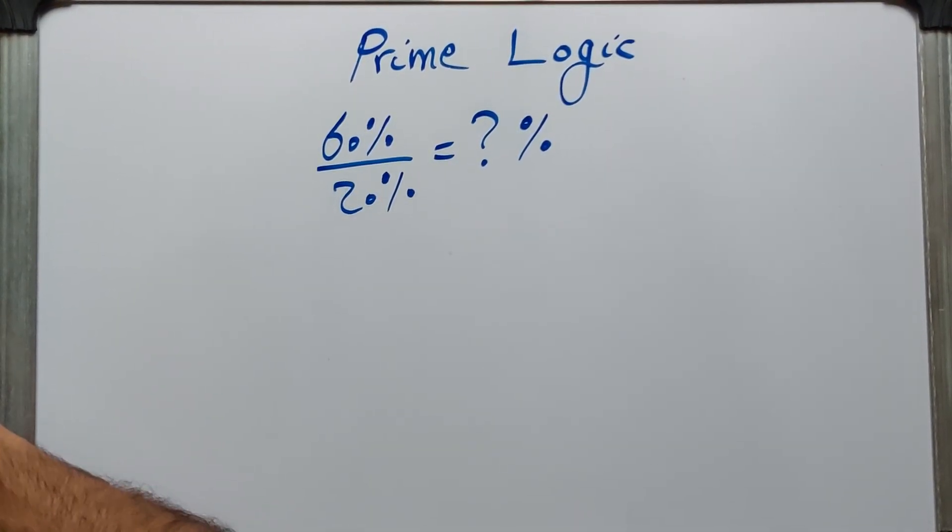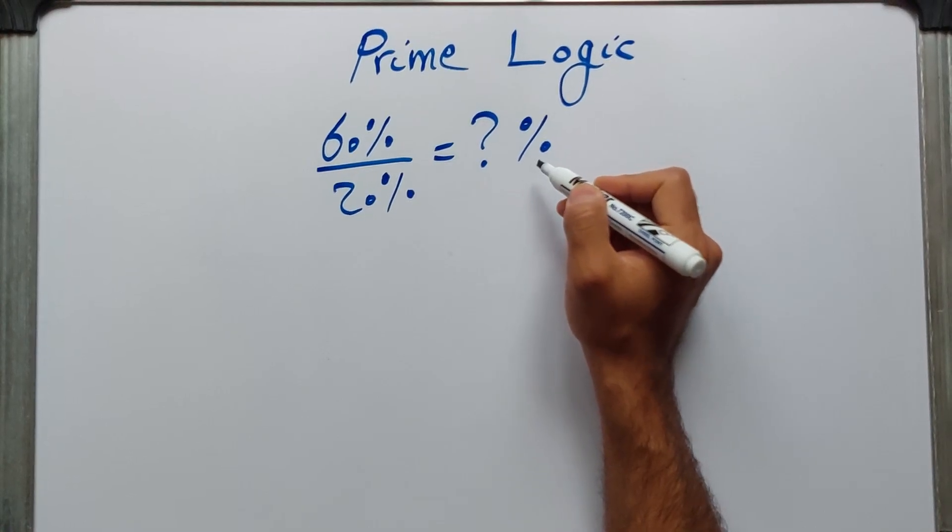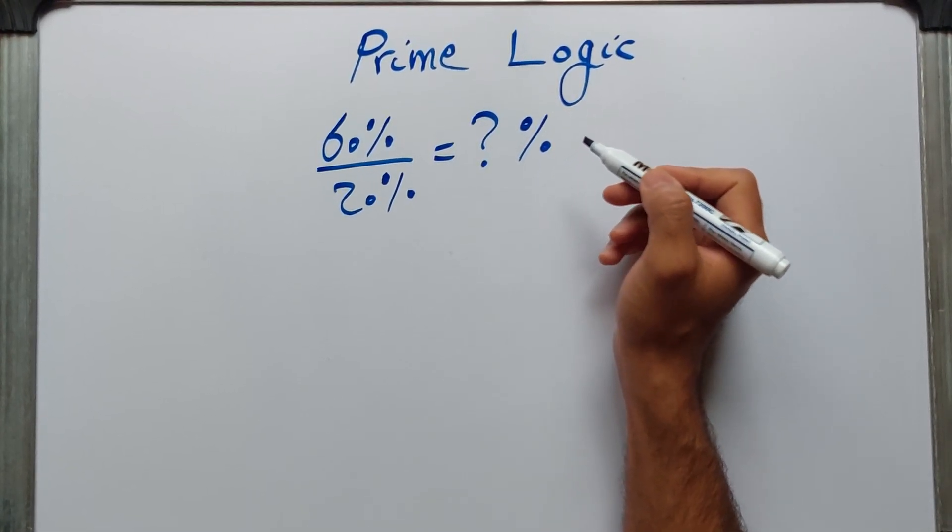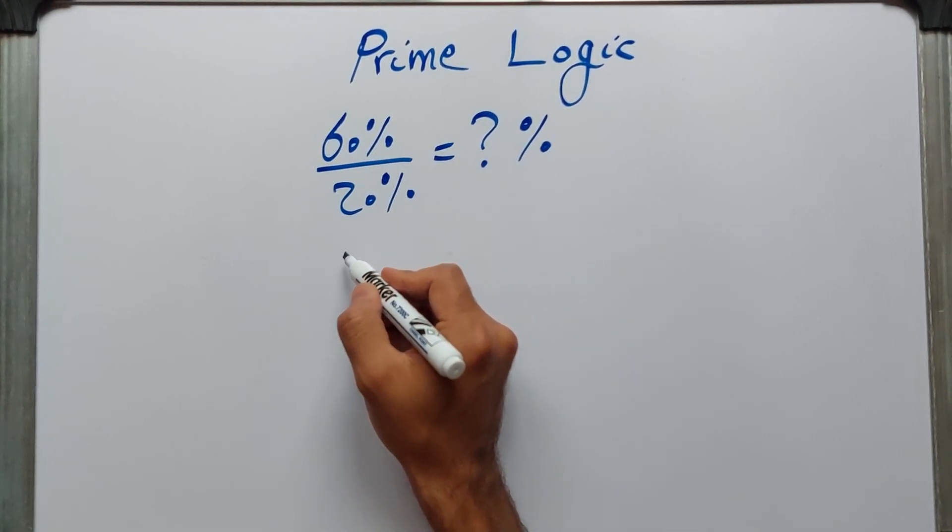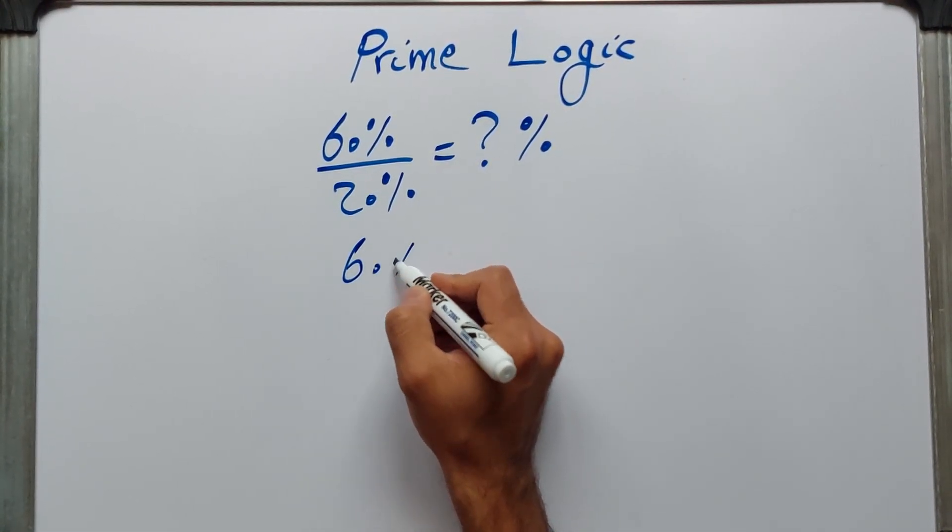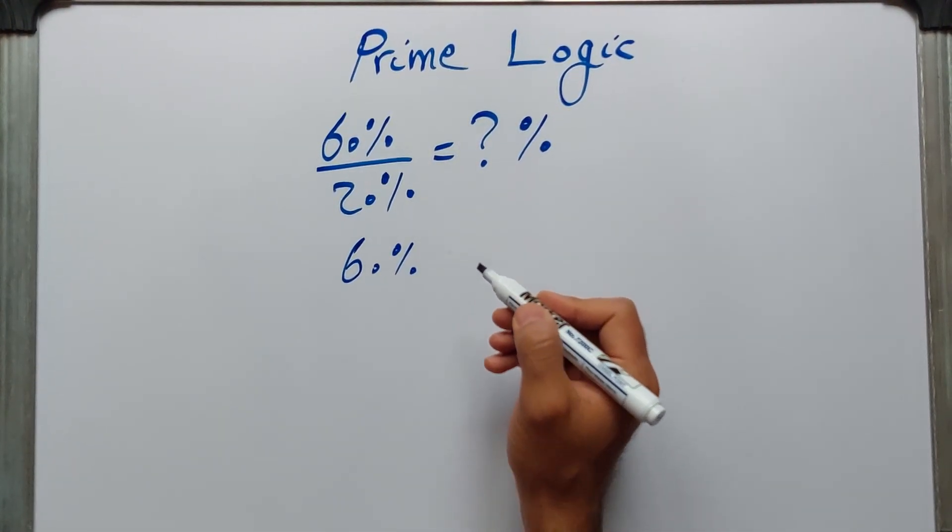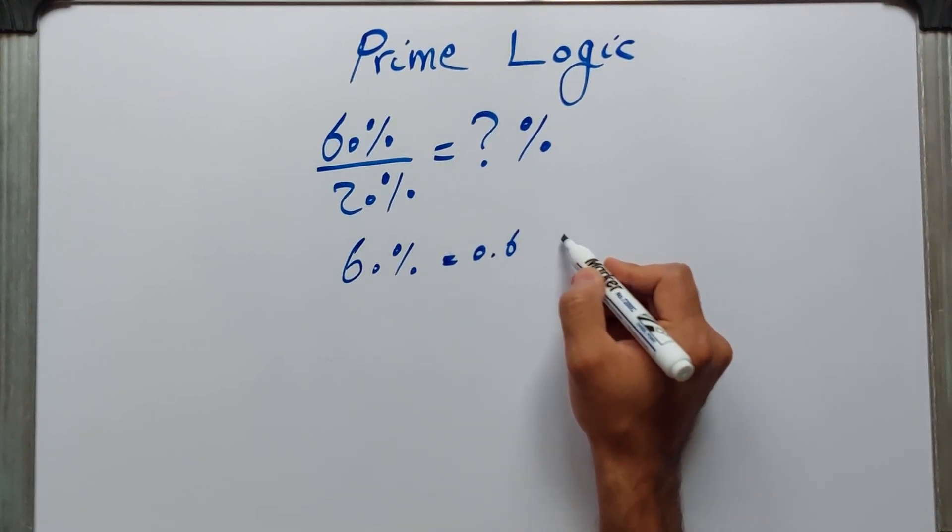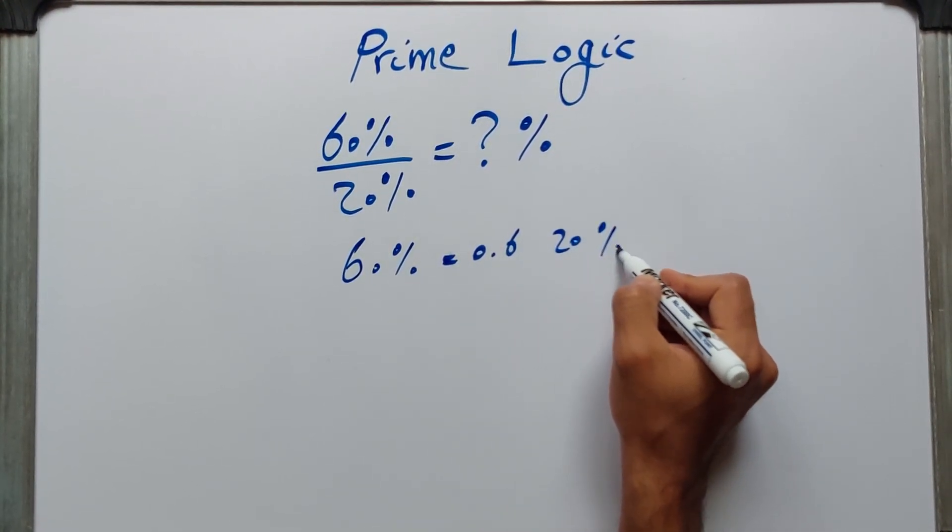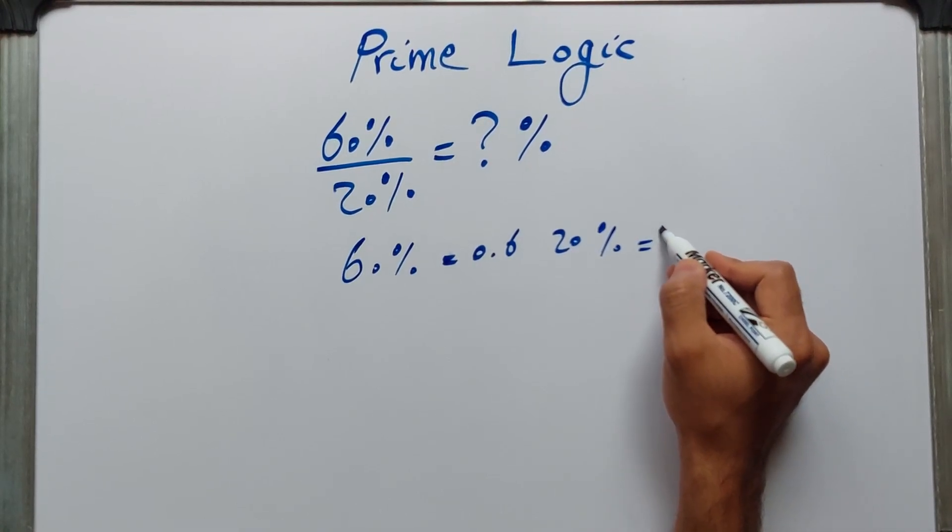So let's break it down. Percent, the percentage sign literally means per cent or per 100. So 60% in decimal form is the same thing as 0.6, and 20% in decimal form equals 0.2.